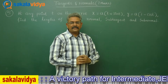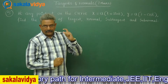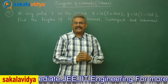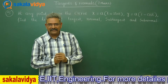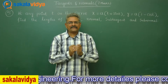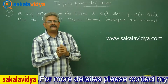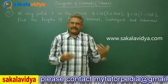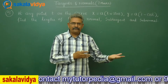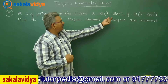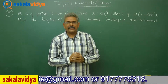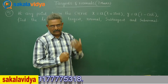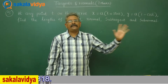That means here four formulae are to be applied: length of the tangent, length of the normal, length of the subtangent, and length of the subnormal. The plan is: first we need to find dy/dx in terms of t — that is parametric differentiation. dy/dx in terms of t is considered as m, whereas y1 stands for a(1 minus cos t). With dy/dx and y1, all the lengths can be evaluated.